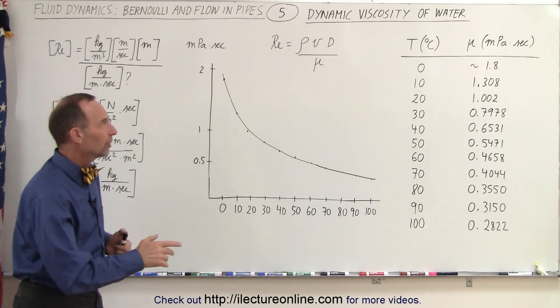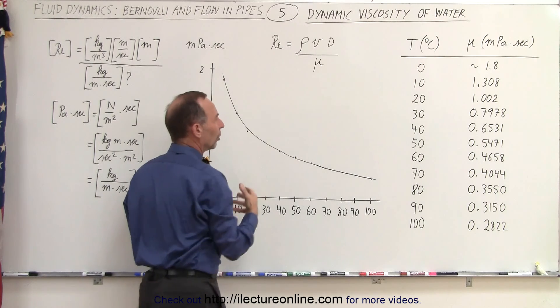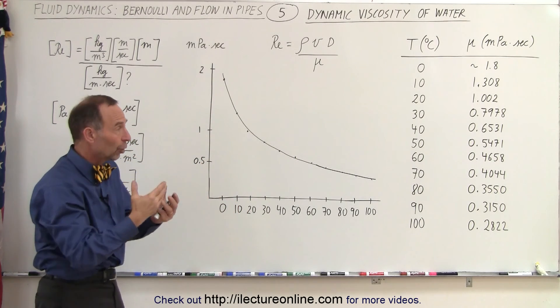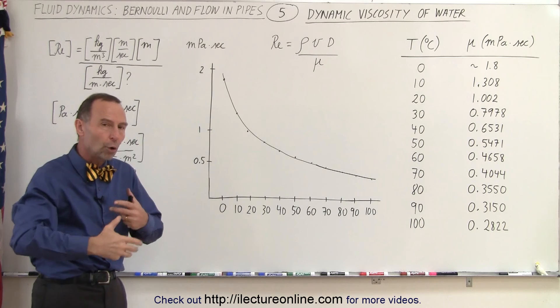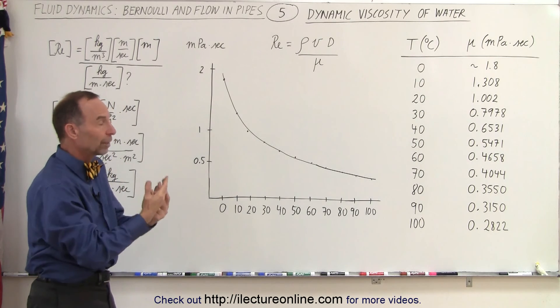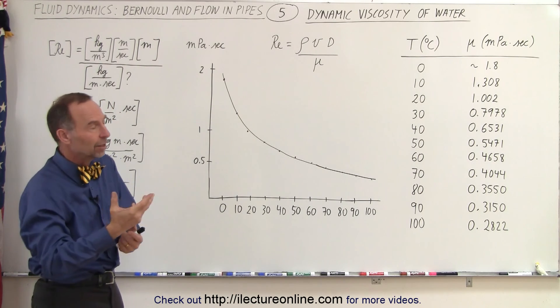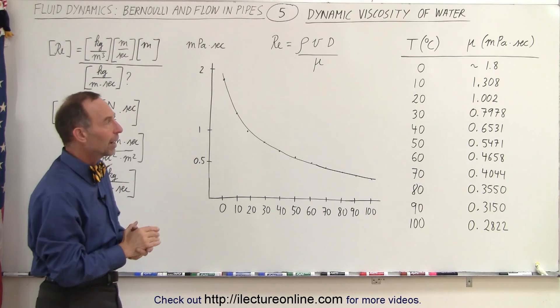In the previous video we saw an equation where we were able to calculate the Reynolds number, which then determines whether or not the flow of the fluid is laminar or turbulent. The greater the number, the more the propensity for the fluid to be turbulent as it flows through the pipe.